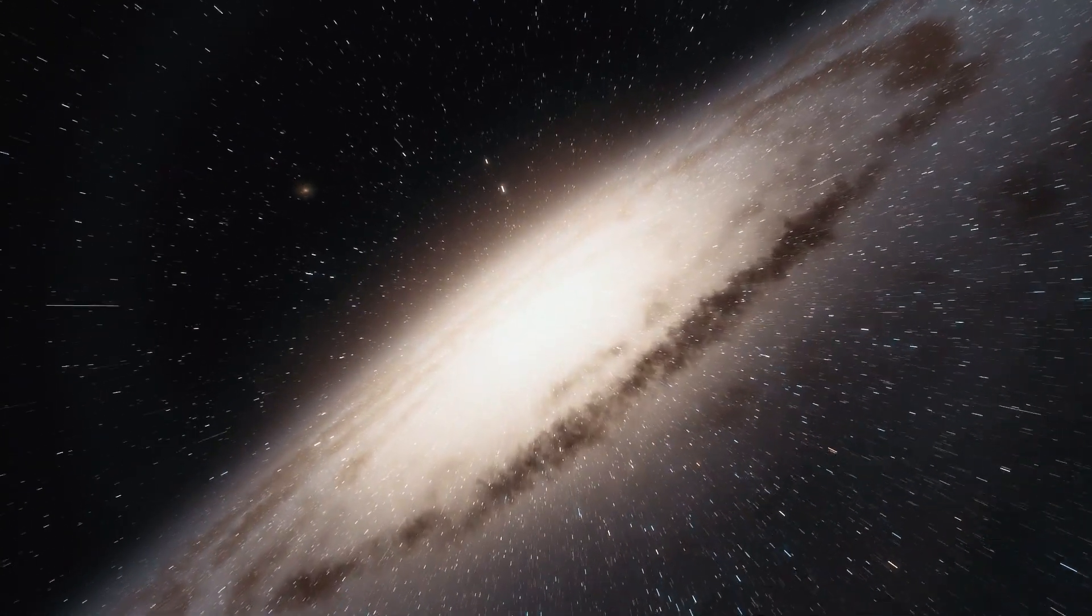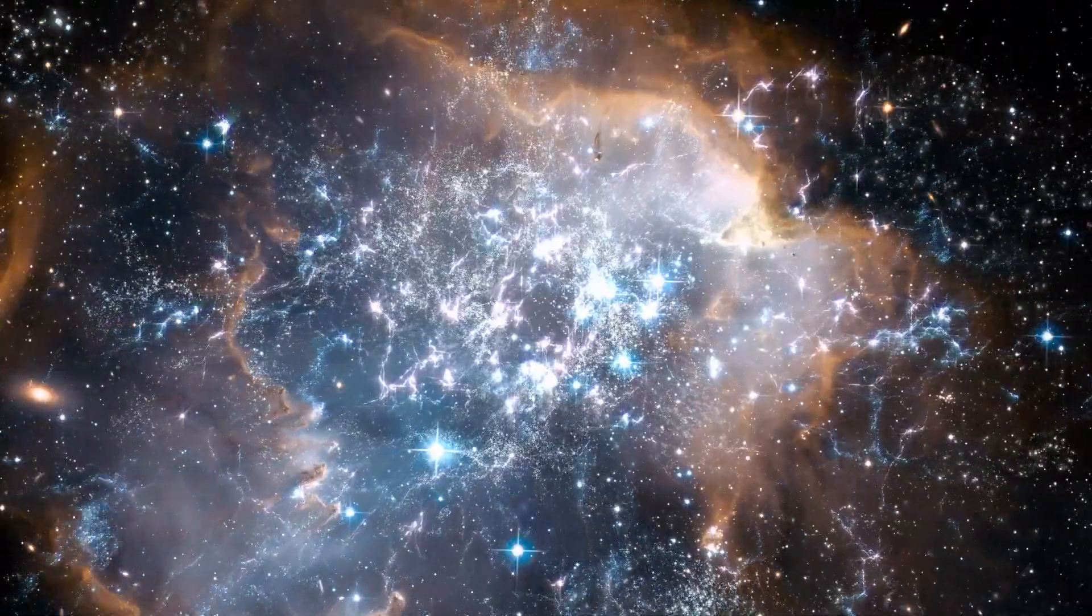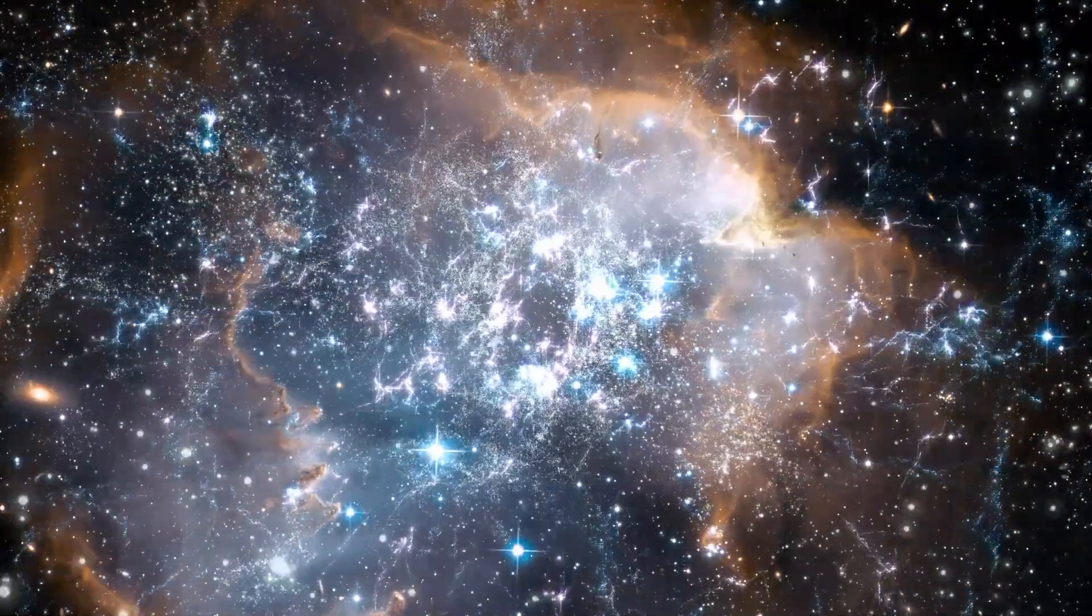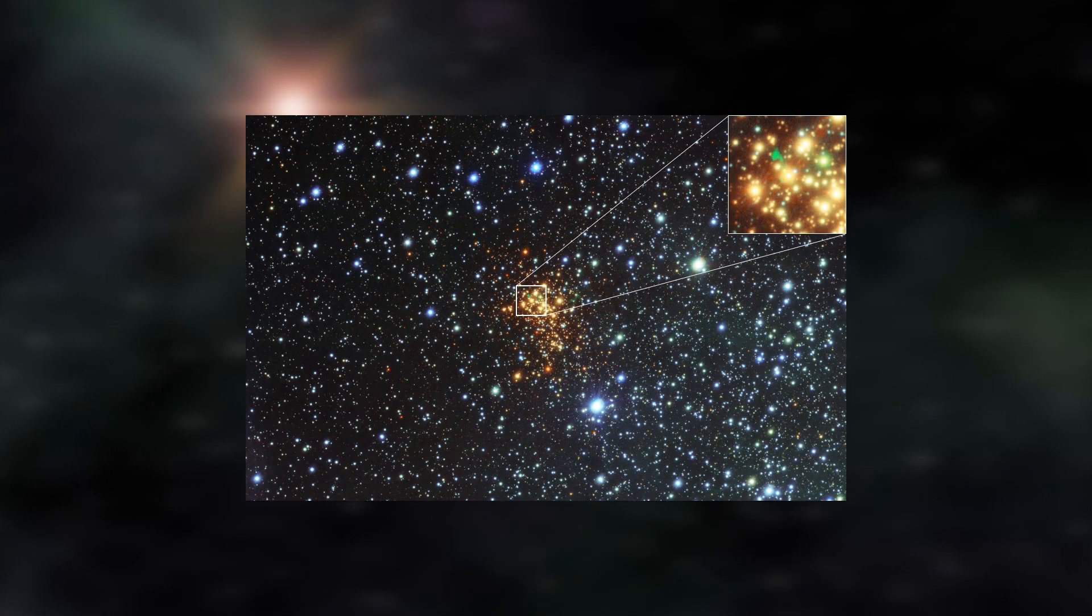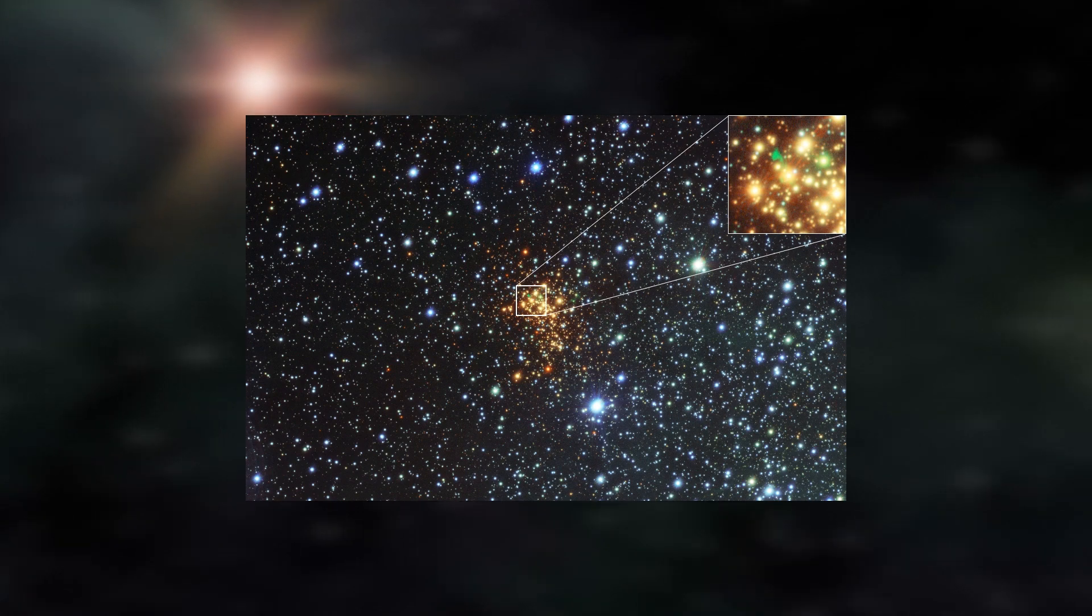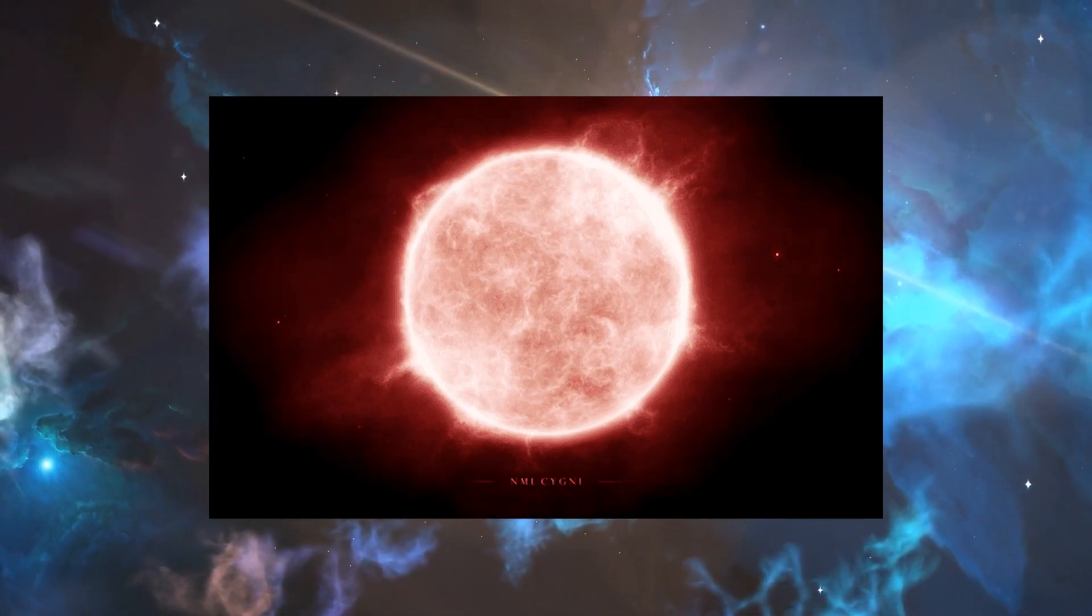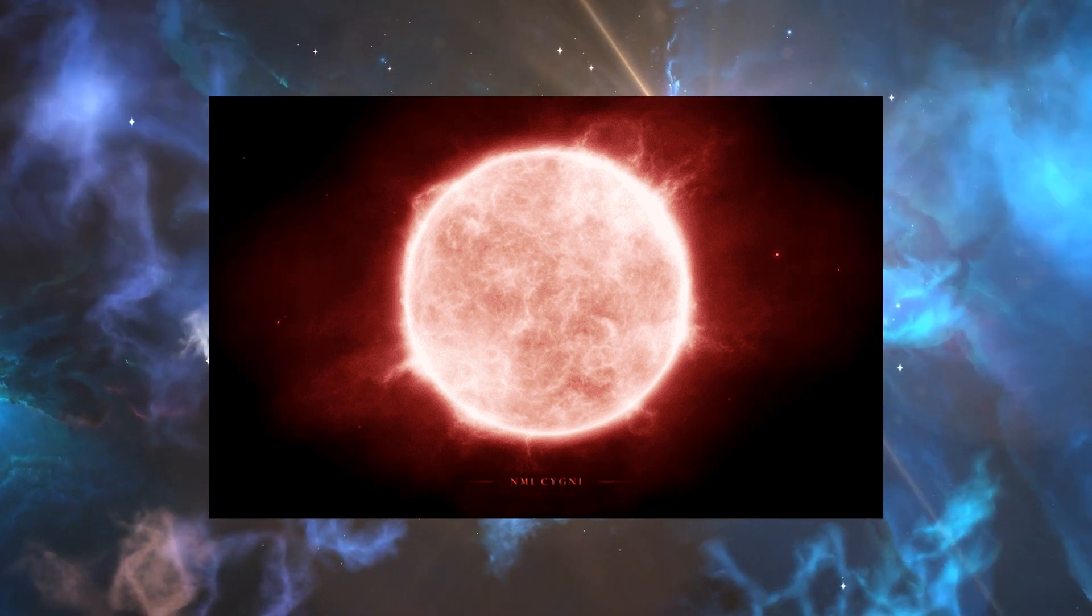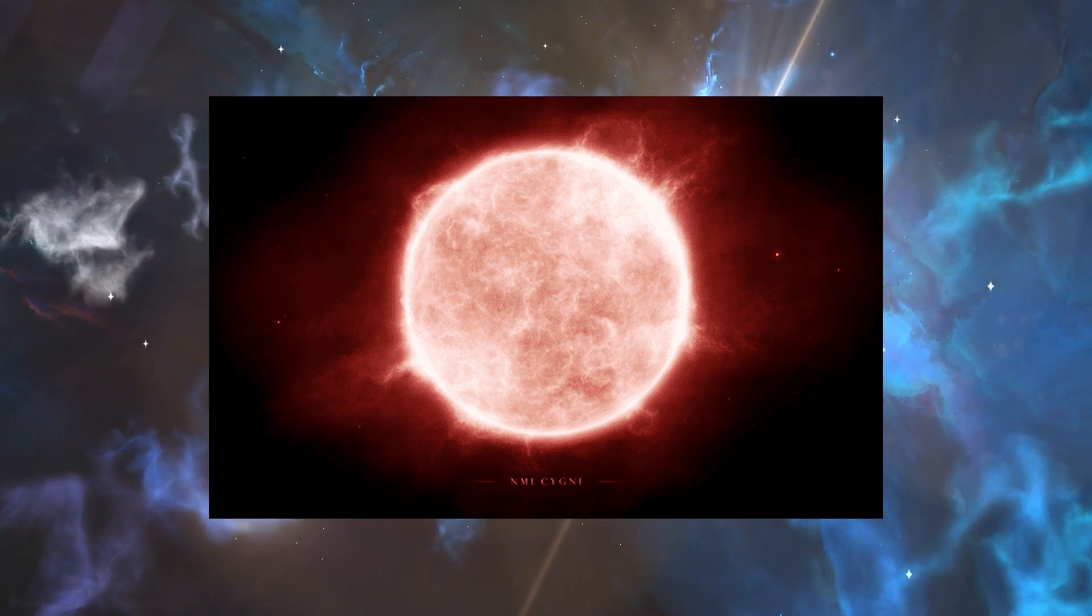The high brilliance of Stevenson 2-18 is one of the most perplexing aspects of it. Based on the Eddington limit of luminosity, which is around 320,000 times as bright as our sun, it is 440,000 times brighter than the sun. This quantity was previously believed to be inconceivable. The highest luminosity or brightness a star may acquire while maintaining hydrostatic equilibrium between the inward force of its gravity and the outward force of its radiation is known as the Eddington limit.